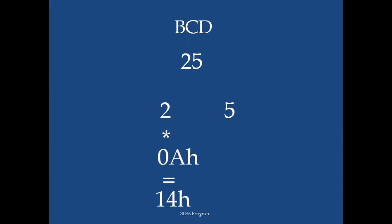So, our example is BCD number 25. This is the hexadecimal equivalent for BCD 25. We take the 2 and multiply it by 0A. We will get 19h as the hexadecimal equivalent for BCD 25.